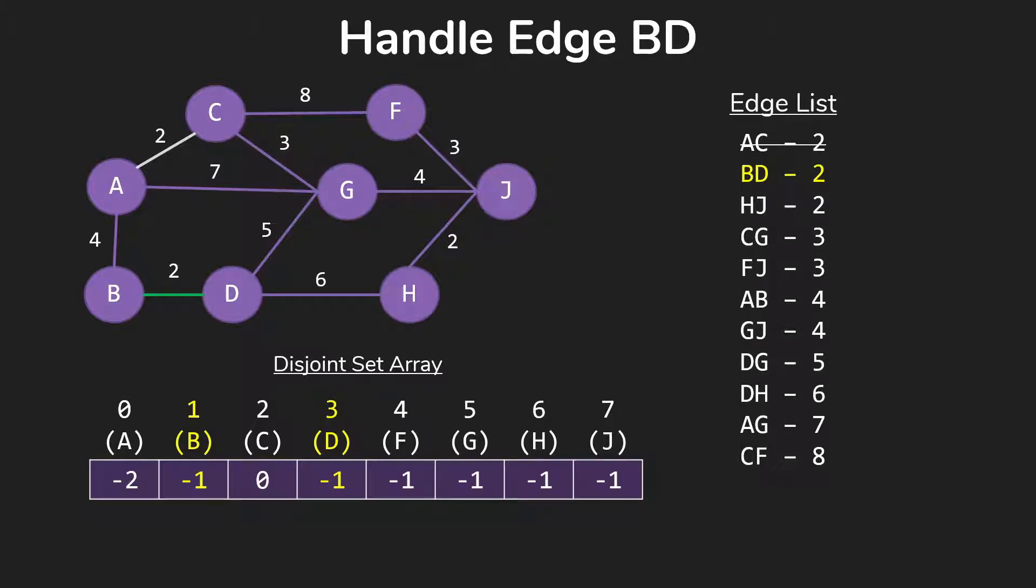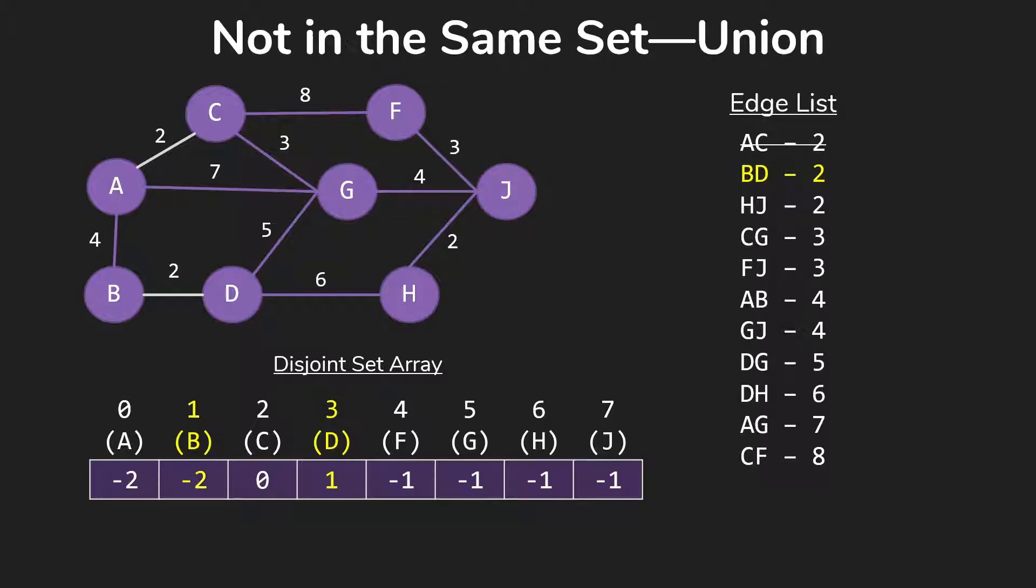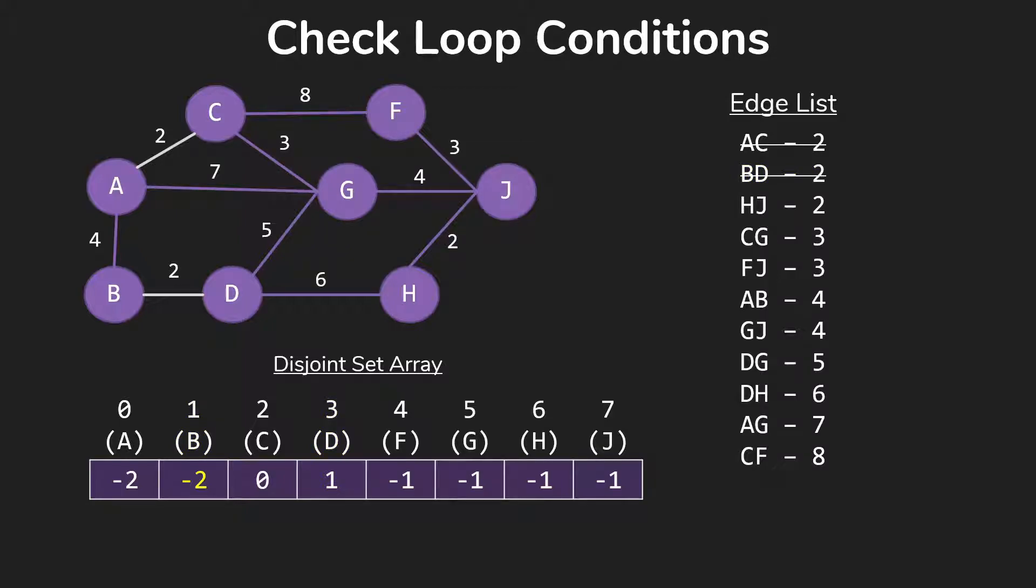So our next edge to handle is going to be BD. We look at those two in the disjoint set and see that they're in different sets. So we union those and add BD to our minimum spanning tree list. That did not complete our tree,